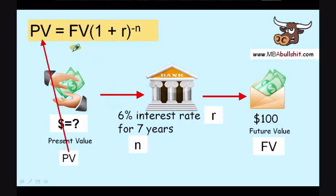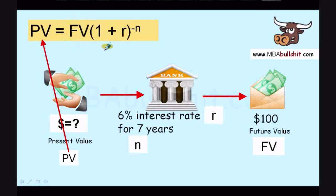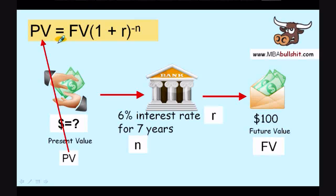One more thing: FV is just one variable. Don't be confused — it is not two variables, F and V. It is just one variable, FV, which means future value, and that is $100. The same applies to PV — it is one variable, PV. It is not P multiplied by V as you might have learned in algebra in high school.